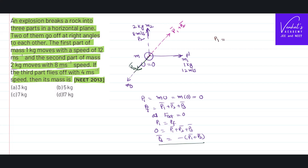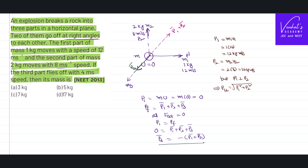p1 = m1 × v1. m1 is 1 and v1 is 12, so p1 = 12 kilogram meter per second. p2 = m2 × v2. m2 is 2 and v2 is 8, so p2 = 16 kilogram meter per second. Since p1 is perpendicular to p2, the resultant magnitude is the square root of p1² + p2², which is root of 12² + 16² = root of 144 + 256 = root of 400 = 20 kilogram meter per second.